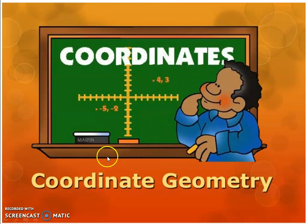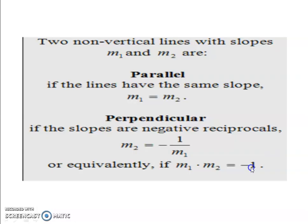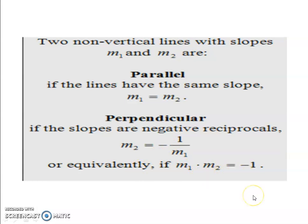Coordinate Geometry covers intersecting lines, parallel lines, slope of tangent, and the equation of a line using the two-point form. We need to revise: two non-vertical lines with slopes M1 and M2 are parallel if M1 equals M2, and perpendicular if M1 times M2 equals minus 1.